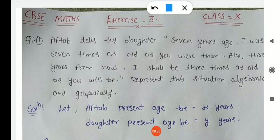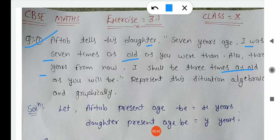Now I start question number one. Question number one: Aftab tells his daughter, '7 years ago I was 7 times as old as you were then. Also, 3 years from now I shall be 3 times as old as you will be.' Represent this situation algebraically and graphically. So we let Aftab's present age be X and his daughter's present age be Y.